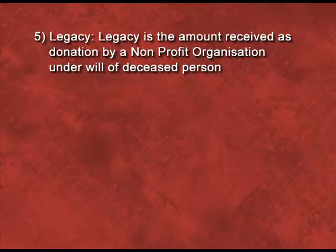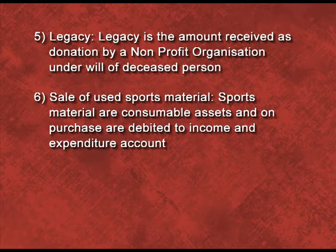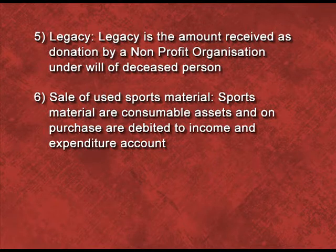Next is legacy — the amount received as donation by an NPO under the will of a deceased person. It is a capital nature item, so we transfer it to the liability side of the balance sheet. Next is sale of used sports material. Sports material is a consumable item; we have to see a separate calculation for the consumable item, then transfer the amount to the income and expenditure account. But if there is any profit or loss, we will transfer that profit or loss to the income and expenditure account as well.